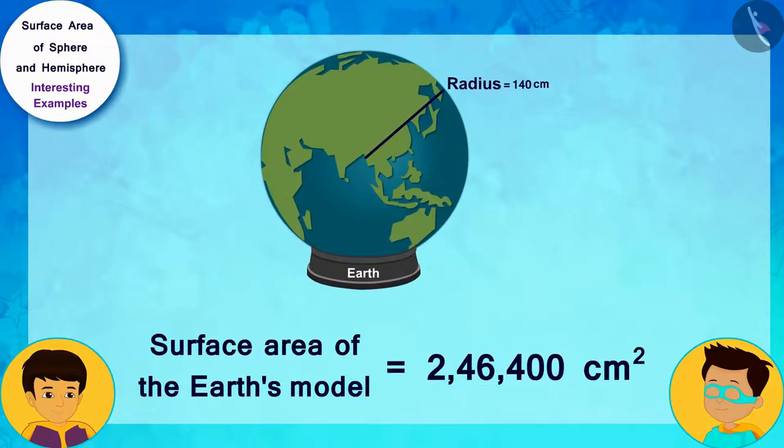Look, the surface area of the earth's model is 2,46,400 square centimeters.